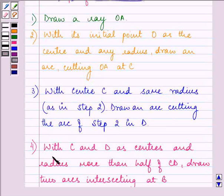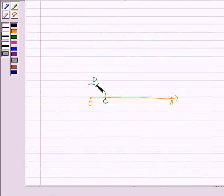Then, with C and D as centers and radius more than half of CD, draw two arcs intersecting at P. So we will be taking C and D one by one as center, and the radius should be more than half of CD. We need to draw one arc with C and then one arc with D intersecting at point B.